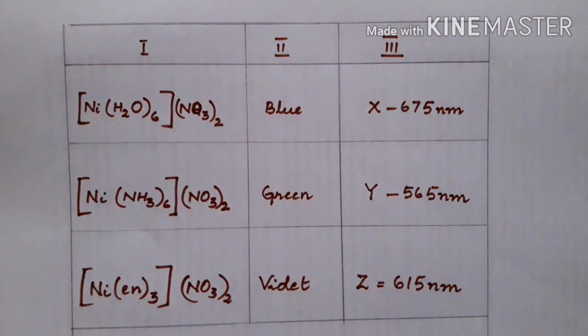Check the question given here. It is a match the following question. First column contains many complexes, second column the colors, and third column represents the wavelength. You are supposed to match the correct ones.